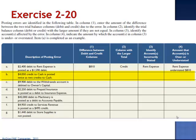In letter B, a $4,050 credit to cash is posted twice as two credits to cash. This would result in a $4,050 difference between the two columns. The column with the larger total would be the credit column, as it holds two credits instead of one. The account that's incorrectly stated is cash, and cash is understated by $4,050.